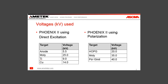The voltages used depend on your target material. The Phoenix 2 using direct excitation can have an open anode, a moly filter, a titanium filter, or a copper filter. These voltages are what you should use depending on your target mechanism. The same is true for the Phoenix 2 using polarization. The HOPG always uses 20 kV, the moly 35 kV, and the palladium tube filter 40 kV.